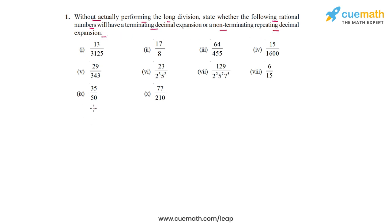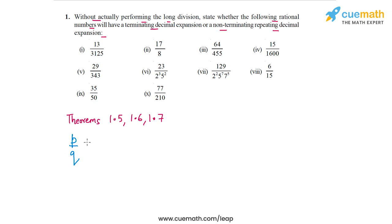We are going to use theorems 1.5, 1.6, and 1.7 from the NCERT textbook, which together say that for any rational number P/Q written in its lowest form, P/Q will have a terminating decimal expansion if the denominator Q, when prime factorized, has only twos and fives.